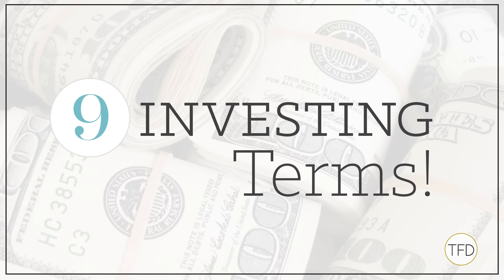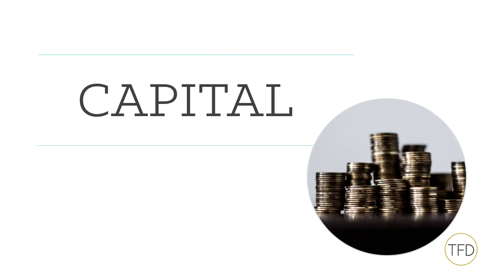So we're going to be talking about nine different terms today, starting with the first one, which is capital, which is something that you might have heard before. And it's also something that you might think of as just being money, like how much money a company has at its disposal. Capital actually refers to the total resources that a business has at its disposal — that could be human resources, financial, or different properties that it has, whatever contributes to its overall value and how much it can do.